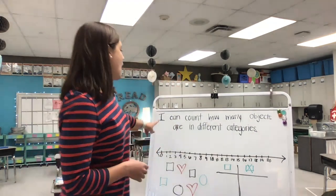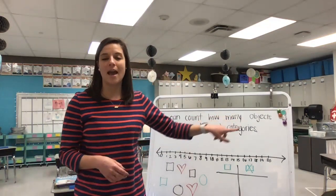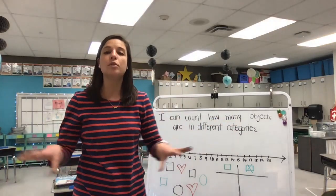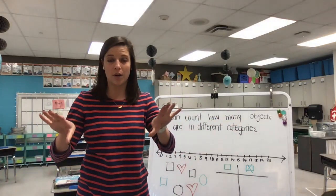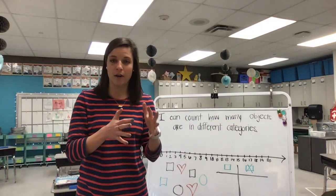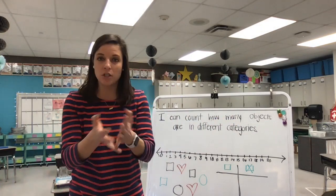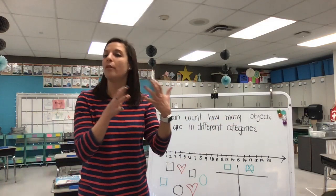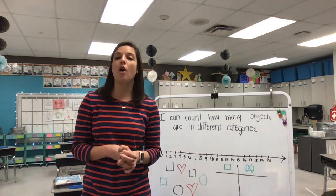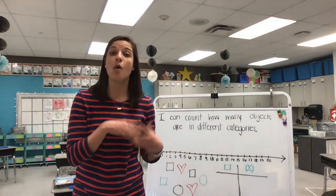So today for math we're going to look at our learning target. It says: I can count how many objects are in different categories. We're going to continue practicing sorting objects into groups or putting them into categories based on things that are alike and things that are different. For example, if I wanted to separate you guys into groups, I could put the girls in a group and the people that are not girls into a group, for example the boys.